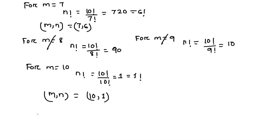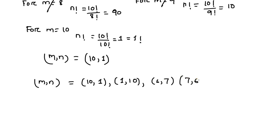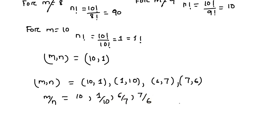So from above, all the possible values of m comma n are: 1 comma 10, 6 comma 7, 7 comma 6, and 10 comma 1. We are asked to find the value of m by n, so the corresponding values are: 10, 1 by 10, 6 by 7, and 7 by 6. These are the possible values of m by n.